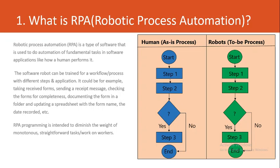The first question every interviewer or manager will ask you is: what is robotic process automation, what is RPA? RPA is a type of software used to automate fundamental tasks in software applications the same way a human performs them. In the simplest terms, RPA is software that will mimic or do exactly the same thing that a human being is currently doing. That is the basic definition of RPA.